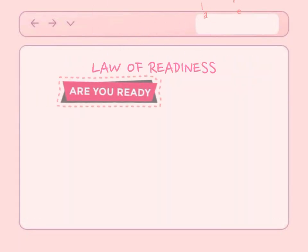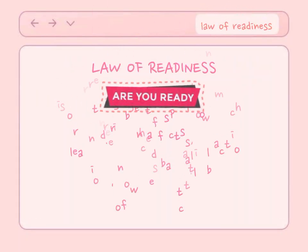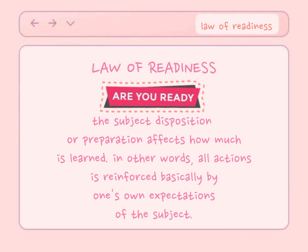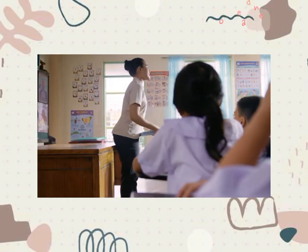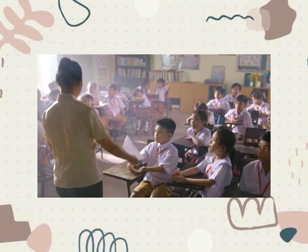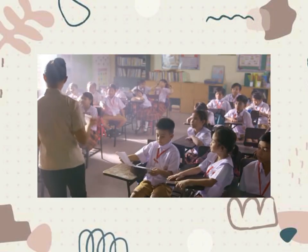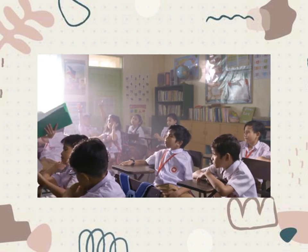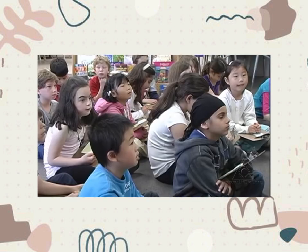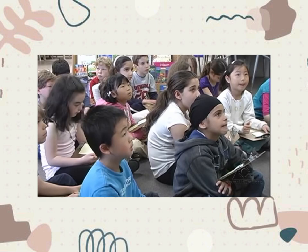The first law is the law of readiness. It states that the subject's disposition or preparation affects how much is learned. In other words, all actions are reinforced by one's own expectation of the subject. An illustration of this is a situation where, as a teacher, before you let your class go over to the next lesson,